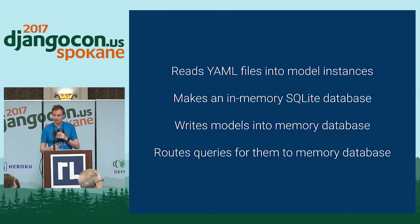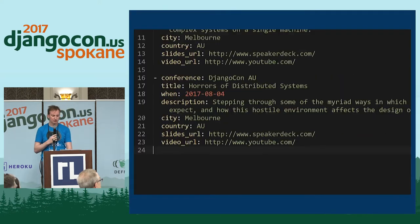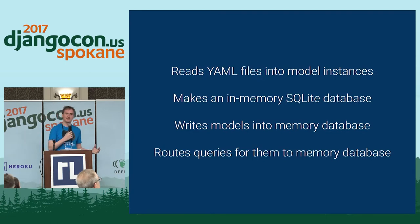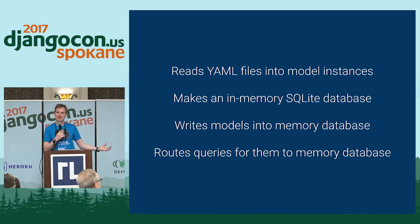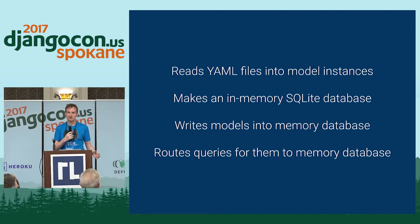How does it work? It's kind of really simple and awful simultaneously. It reads the YAML files into memory, sort of like normal Django fixtures. It then makes an in-memory SQLite database, uses Django's internal migrations code to make tables in that database, writes the models into that database, and routes queries for them using a database router — all on every startup of your software.